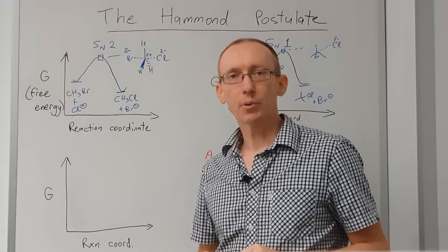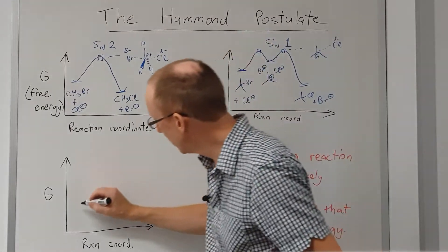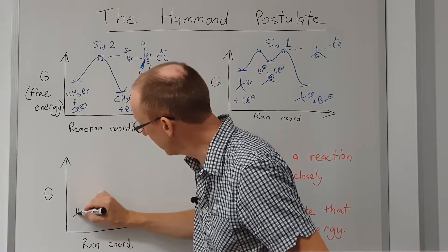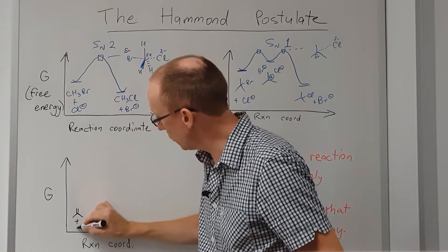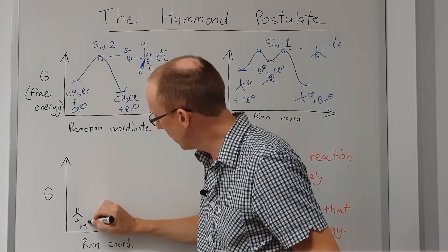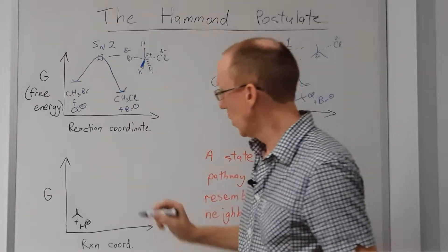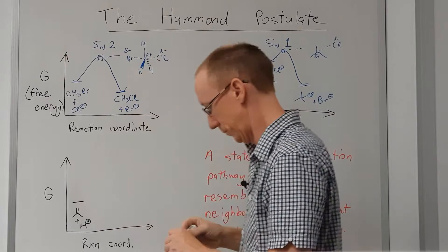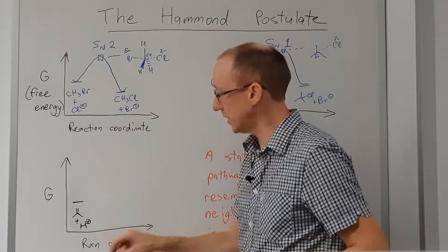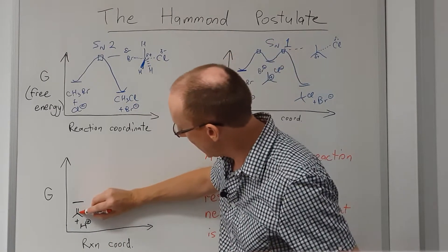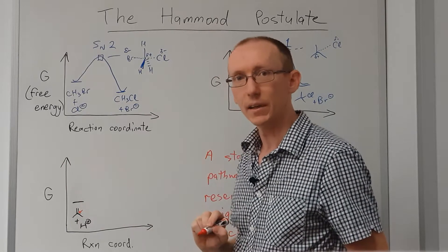What about if we look at protonation of an alkene? If we have a simple alkene like this one and we treat it with an acid, we can get two different carbocations. Let's look at the first example where we protonate at this central carbon here.